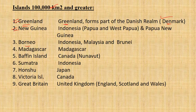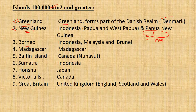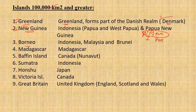The second island is New Guinea. New Guinea Island actually has three parts: West Papua, Papua, and Papua New Guinea. The western parts — West Papua and Papua — belong to Indonesia, while the eastern part, Papua New Guinea, belongs to the country of Papua New Guinea.